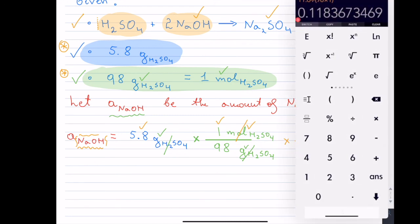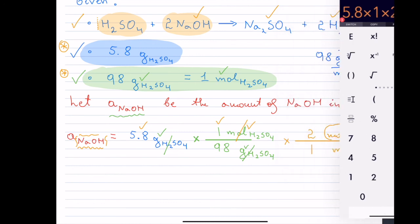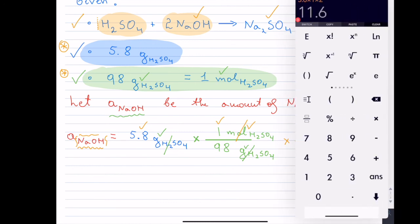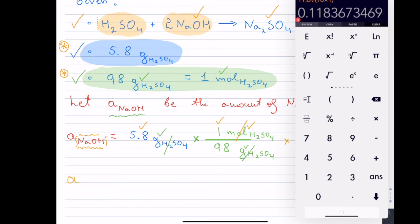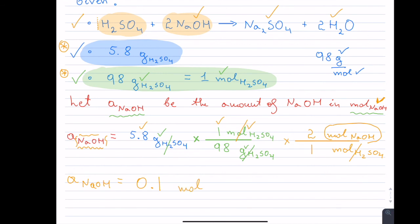So I put 2 moles of NaOH in the numerator — because NaOH has a coefficient of 2 in the reaction. Everything cancels and I'm left with only moles of NaOH. Now I do the multiplication: all numbers on top are 5.8 × 1 × 2 = 11.6, divided by all numbers on the bottom which is 98 × 1 = 98. So 11.6 ÷ 98, rounded to the tenth, gives 0.1 moles of NaOH — and that completes the question.